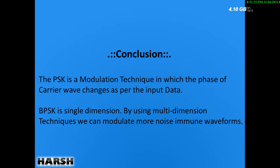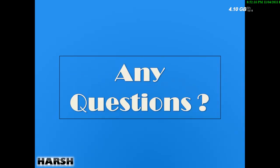In conclusion, PSK is a modulation technique in which the phase of the carrier wave changes as per the input data — for 1 it is +180 degrees (plus π) and for 0 it is 0 degrees. BPSK is a single-dimension modulation as seen in the IQ diagram. By using multi-dimensional techniques like 4PSK or 8PSK, we can achieve more noise-immune waveforms. That's all — you can post any questions in the comments or email me. Thank you.